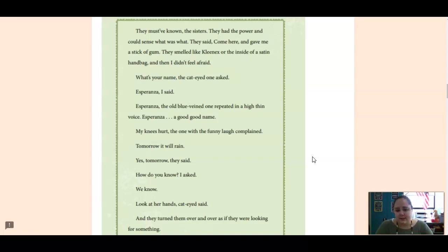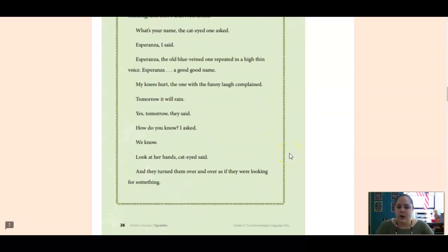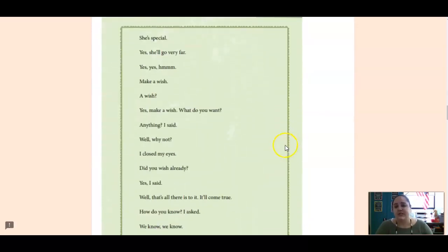What's your name? The cat eye one asked. Esperanza, I said. Esperanza, the old blue-veined one repeated in a high, thin voice. Esperanza, a good, good name. My knees hurt, the one with the funny laugh complained. Tomorrow it will rain. Yes, tomorrow, they said. How do you know? I asked. We know. Look at her hands, cat eye said, and they turned them over and over as if they were looking for something. She's special. Yes, she'll go very far. Yes, yes.